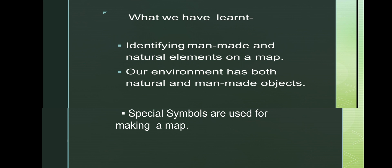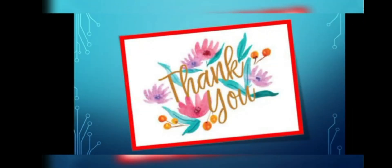So students, what have we learnt today? Identifying man-made and natural elements on a map. Our environment has both natural and man-made objects. Special symbols are used for making a map. Do understand the concepts and revise at home. Thank you.